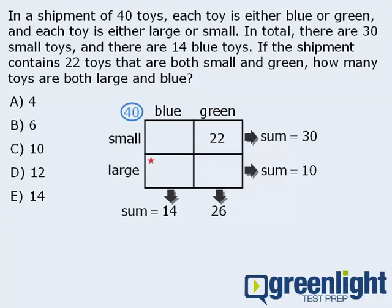For example, we already learned that these two boxes must add to 30, so this box must contain 8 toys. We also know that these two boxes must add to 14, so this box must contain 6 toys. And finally, we know that these two boxes must add to 26, so this box must contain 4 toys.